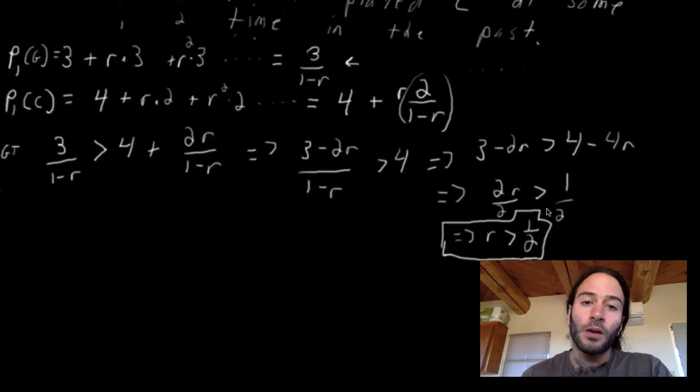So what does this mean? Remember, the discount rate represents how much you value the future relative to the present. The higher r, the more you value the future. So what this is saying is that if player one values the future, it's not worth it for him to earn four today and then two forever. He would rather earn three today, which is less than four, but then earn three from that point on and forever. Or in other words, player one is willing to forego a short term gain in payoffs from three to four if he can be guaranteed a higher long term payoff. That's the case if r is greater than one half.